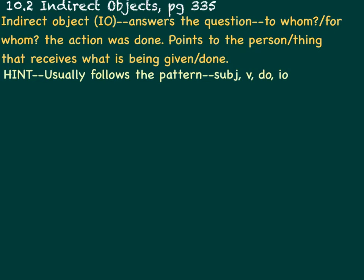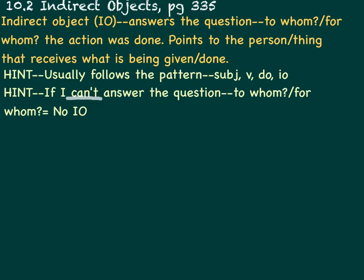Hint: It usually follows the pattern subject, verb, direct object, indirect object. Hint: If I can't answer the question to whom or for whom, it means there's no indirect object.